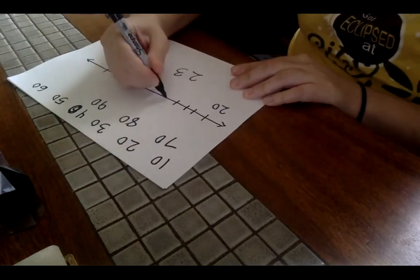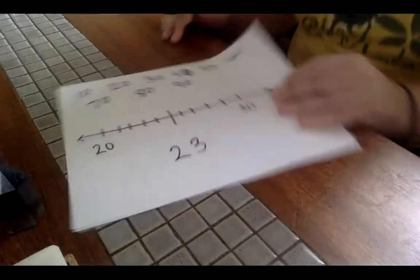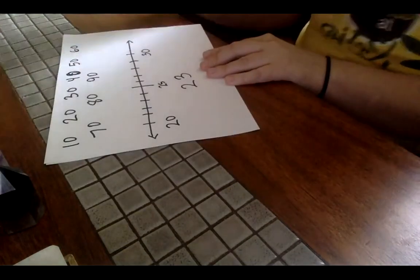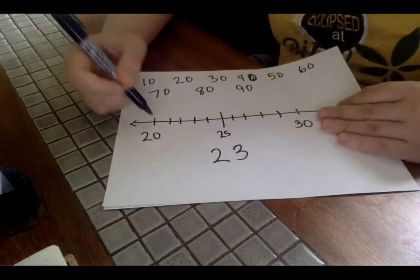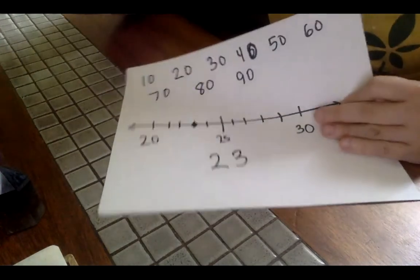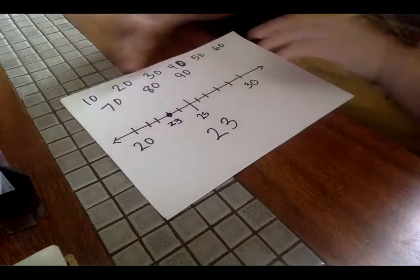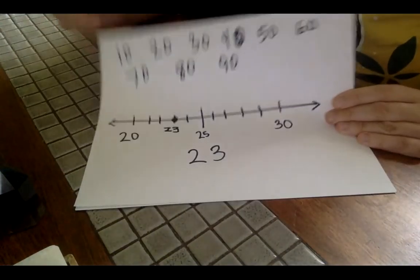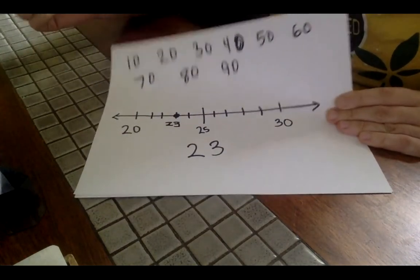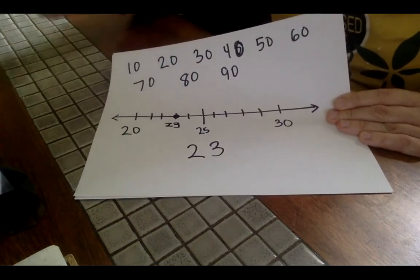So I'm going to have a number line that's going from 20 to 30. We're at 21, 22, 23, 24, 25, 26, 27, 28, 29, 30. That's pretty well done. So this is our halfway point. And I'm going to plot 23 on our number line. Well, basically, we're looking at which ten it's closer to. So 23, we can see really easily, it's closer to 20. So 23 would round to 20.